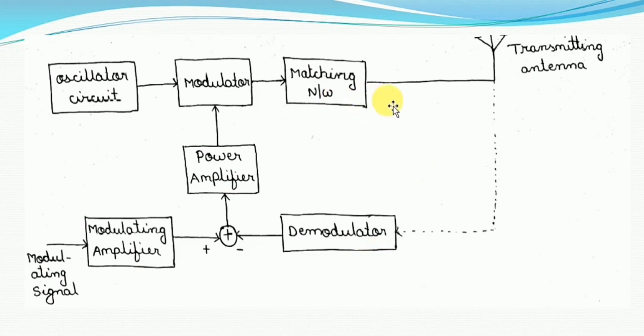The modulator signal is given to the transmitting antenna and the sample of modulator signal is given to the demodulator as a feedback signal. The demodulator should be designed in such a way that it has to act as linear and produce a signal which is proportional to the modulating signal envelope.